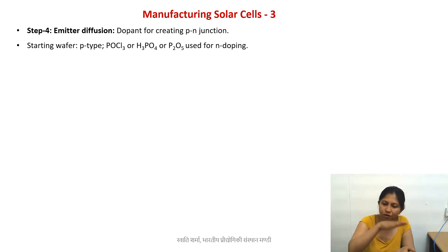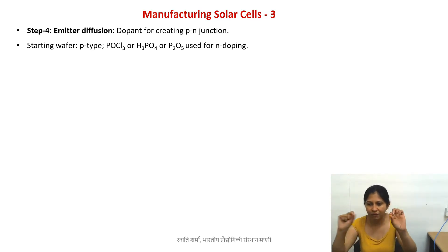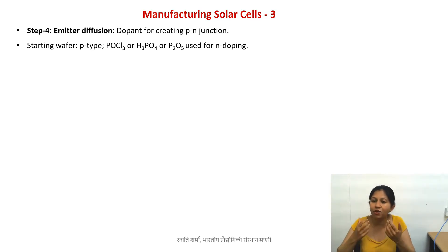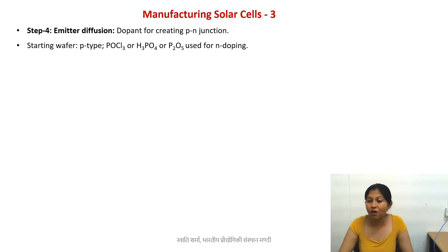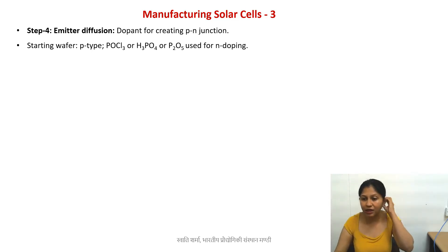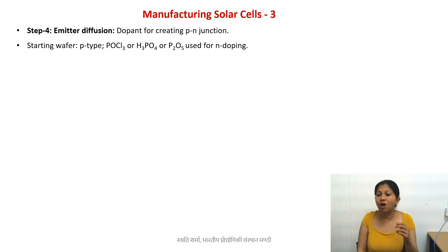We try to diffuse some phosphorus atoms into it from the top. So now we have the P-layer, and on top of that we have a little N-layer, and we already have the P-N junction created this way. Some common precursors for phosphorus, shown on the screen, are phosphoric acid, POCl3, or phosphorus pentoxide.